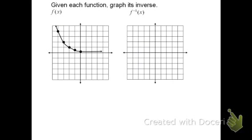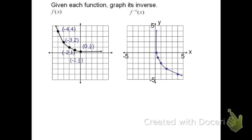I'm going to put up another example — given this graph, find its inverse. We identify every point with nice, clean coordinates: (−4, 4) becomes (4, −4); (−3, 2) becomes (2, −3); (−2, 1) becomes (1, −2); (−1, ½) becomes (½, −1); and (0, ¼) becomes (¼, 0). Connecting these points gives the shape of the new graph. In this case, both the original function and its inverse are functions.